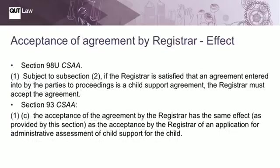There is no strict obligation in the Child Support Assessment Act for anyone to actually register the agreement, whether that agreement is a limited agreement or a binding agreement. However, sections 98U and 93 of the Child Support Assessment Act tell us what the obligations of the child support agency are once an application is made for acceptance of the agreement, and the effect of the agreement once it is accepted. First, if the agreement meets the legislative requirements, then the agreement must be accepted. Second, once the agreement is accepted, it takes the place of a child support assessment. The importance of this is that once registered, the child support agency has all the powers of collection and enforcement of child support that it would otherwise have under a child support assessment. Without successful registration of the agreement, the child support agency has no power.